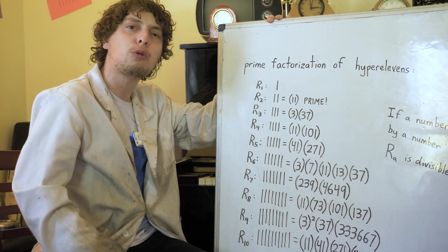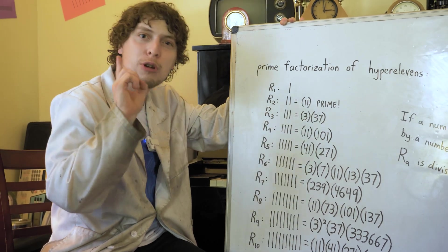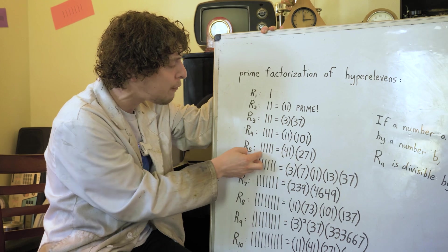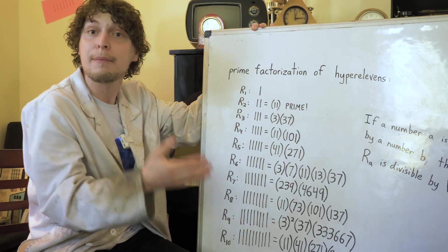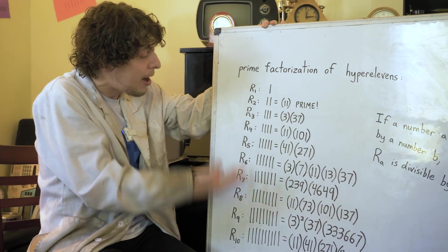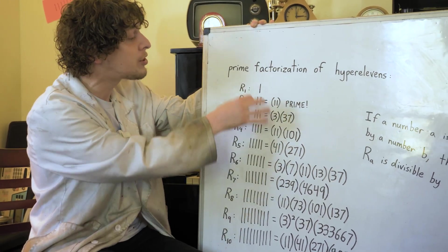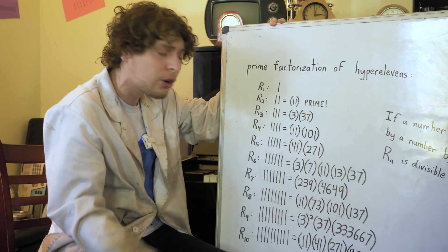And this means that if we're hunting for hyper 11s that are prime numbers, we only have to look for ones where the amount of ones in them is a prime number. Those are the only possibilities because any composite amount of ones will divide at least one earlier one.